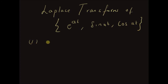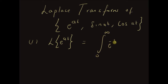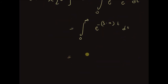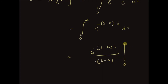The first one is the Laplace transform of e to the power at, which is by definition equal to the integral from 0 to infinity of e to the power minus st times e to the power at dt. This equals the integral from 0 to infinity of e to the power minus (s minus a)t dt, which equals e to the power minus (s minus a)t over minus (s minus a), evaluated from 0 to infinity.